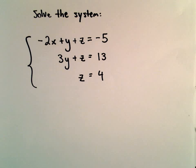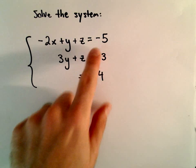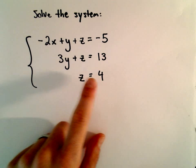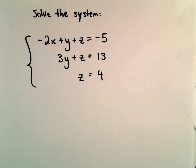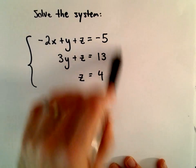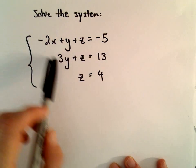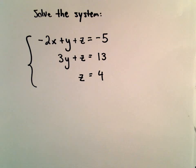Here we're going to solve the system of equations: negative 2x plus y plus z equals negative 5, 3y plus z equals 13, and z equals 4. So this one's basically almost done for us. Eventually what we're going to try to do is make more complicated systems of equations resemble something like this.